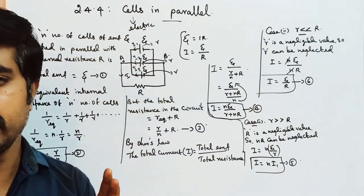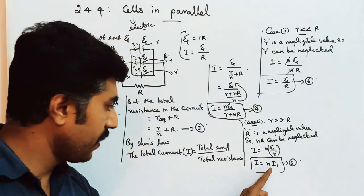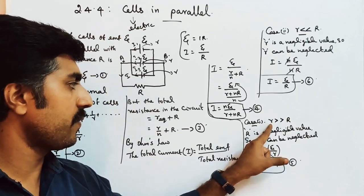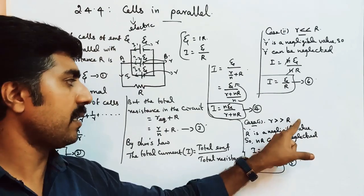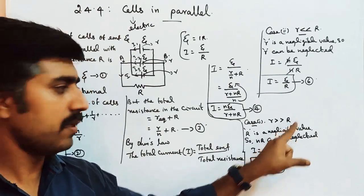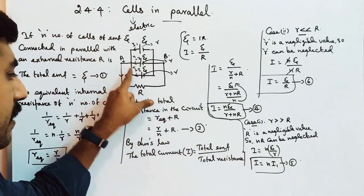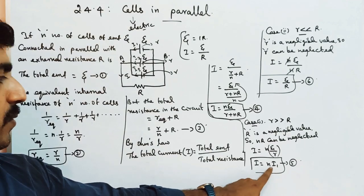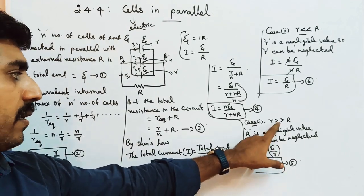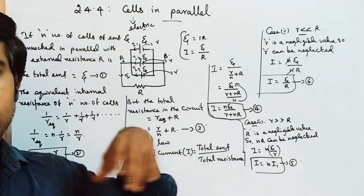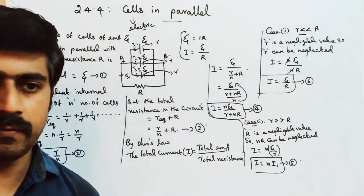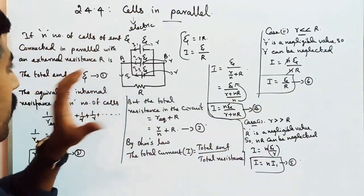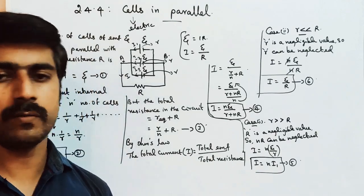So which condition is more advantageous? Equation number 5 is the more advantageous condition. If the internal resistance of a cell is very much greater than the external resistance, the total current supplied by the battery equals N times the current supplied by each individual cell. This is the best condition for cells connected in parallel. Thank you.